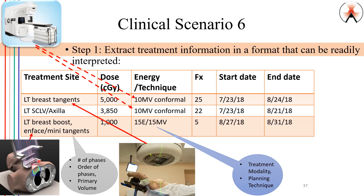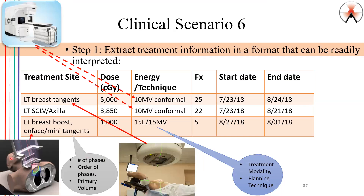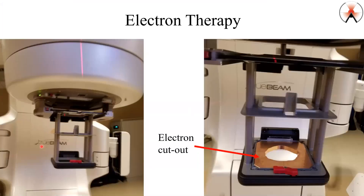Either way, it will tell you that it was a 3D plan. So here's the cone used for electron therapy, and at the bottom you're going to see that electron cutout. Notice it has the shape of the volume that the physician wants to irradiate. So if you have an electron cutout, that's 3D conformal — meaning this patient actually underwent a CT simulation, 3D conformal plan.